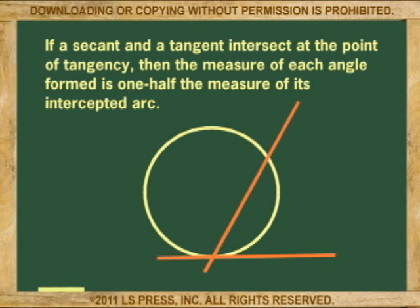If one secant and a tangent intersect at the point of tangency, then the measure of each angle formed is one-half the measure of its intercepted arc.